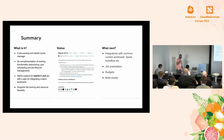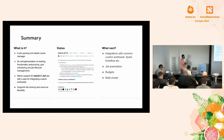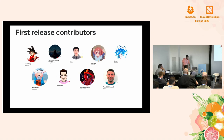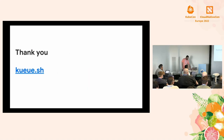What's next? We want to prove this also works for custom workloads, starting with integration with common operators like Spark and Kubeflow. We want to implement job preemption — the suspend flag is a powerful, simple concept: unsuspend means start the job, suspend means preemption. We'll use that for more advanced job management based on job runtime. Budgets and multi-cluster are also on our roadmap. Thanks to all contributors to Kueue so far — it's in its very first days. You can visit our repo at kueue.sh. Thank you.